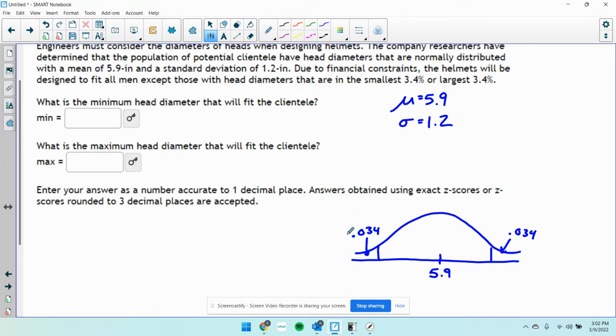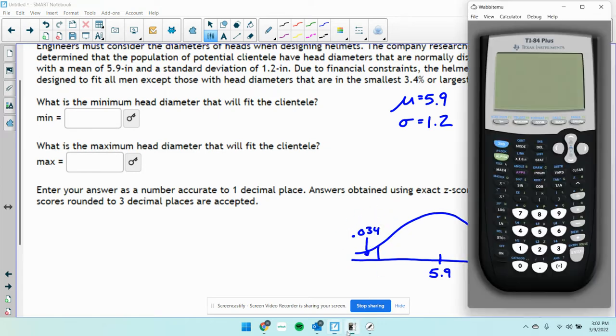Let's find this one first. I think that's the easier of the two. The thing to keep in mind is when you do this, the calculator always wants areas to the left of the value we're looking for.